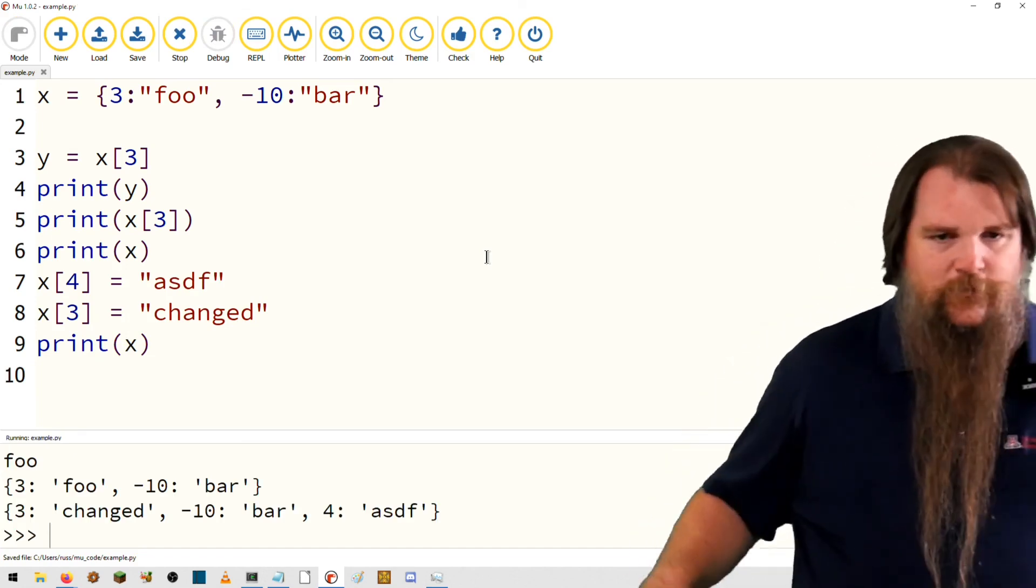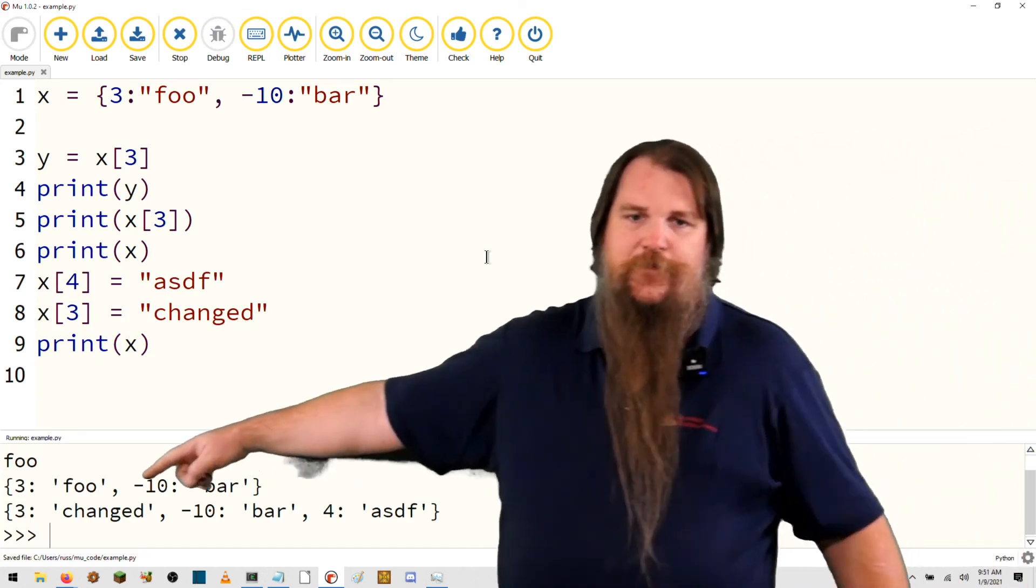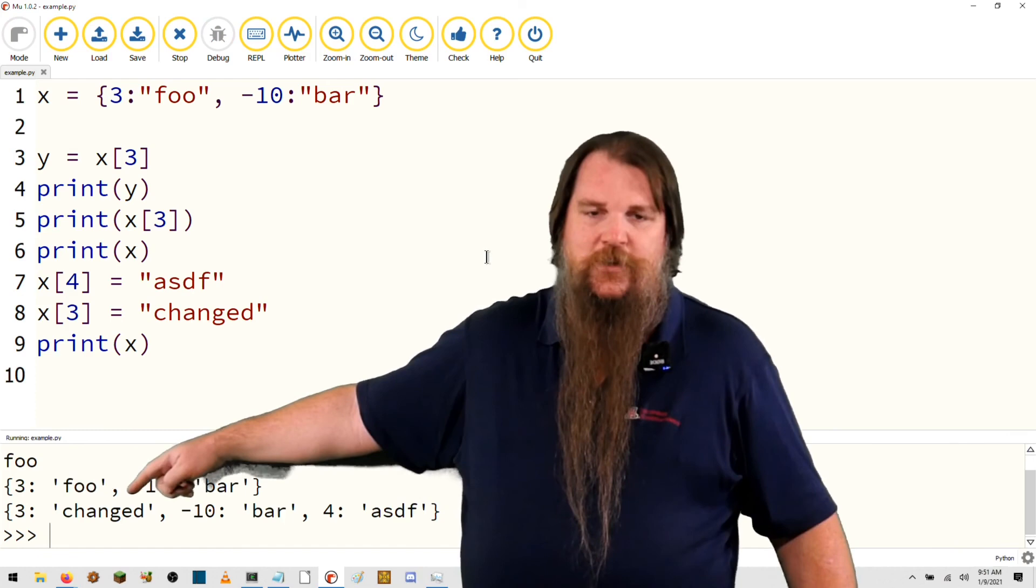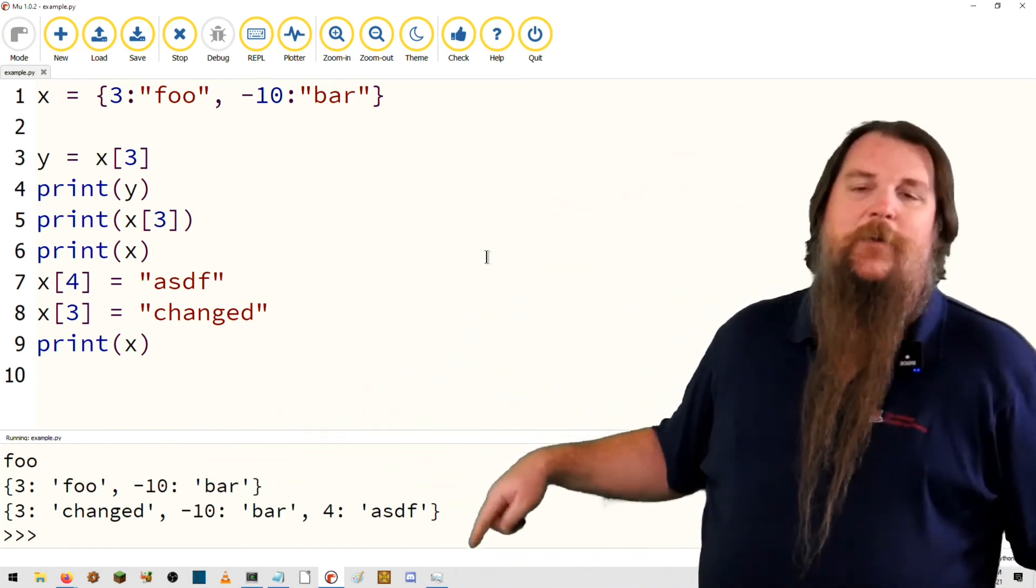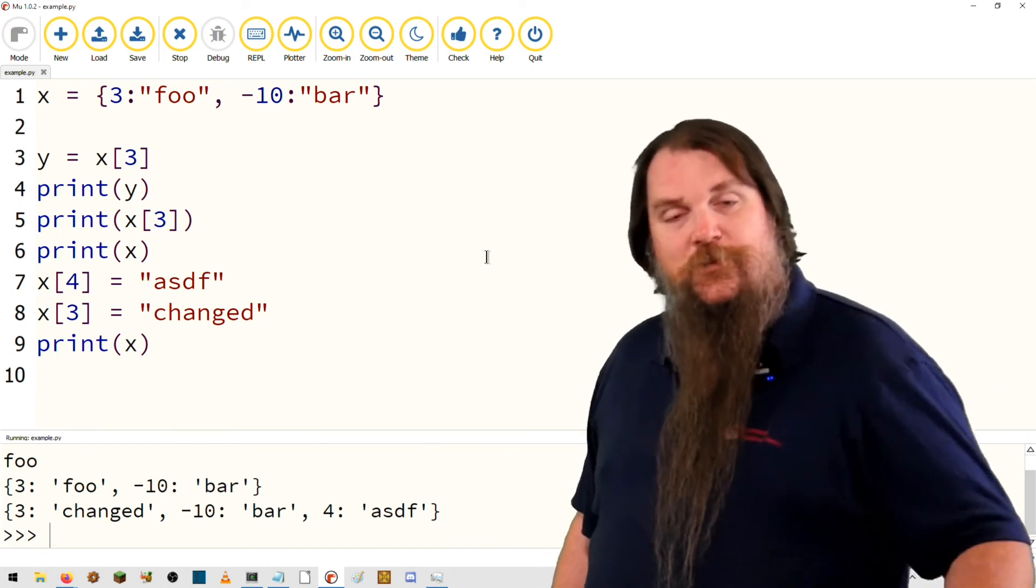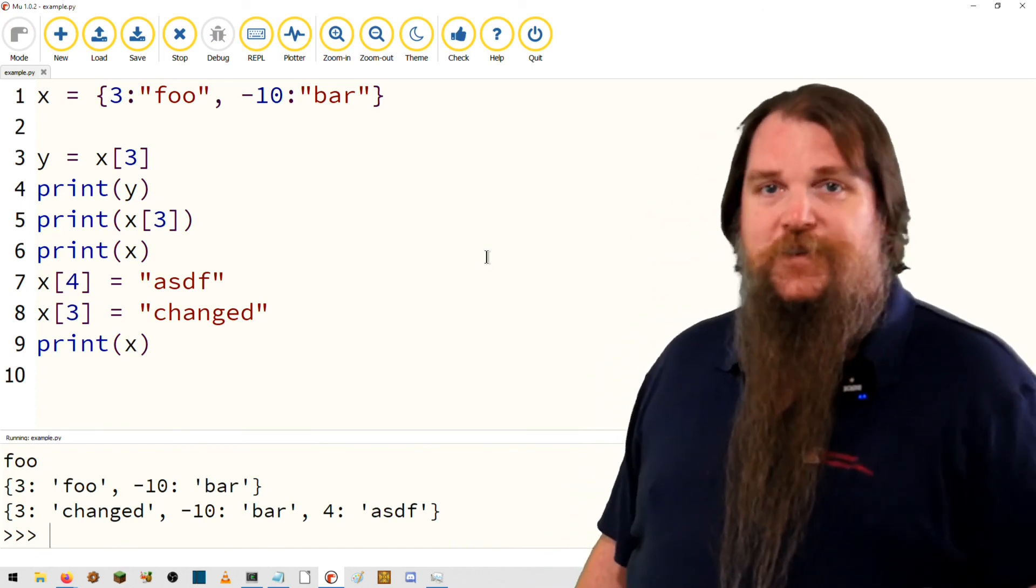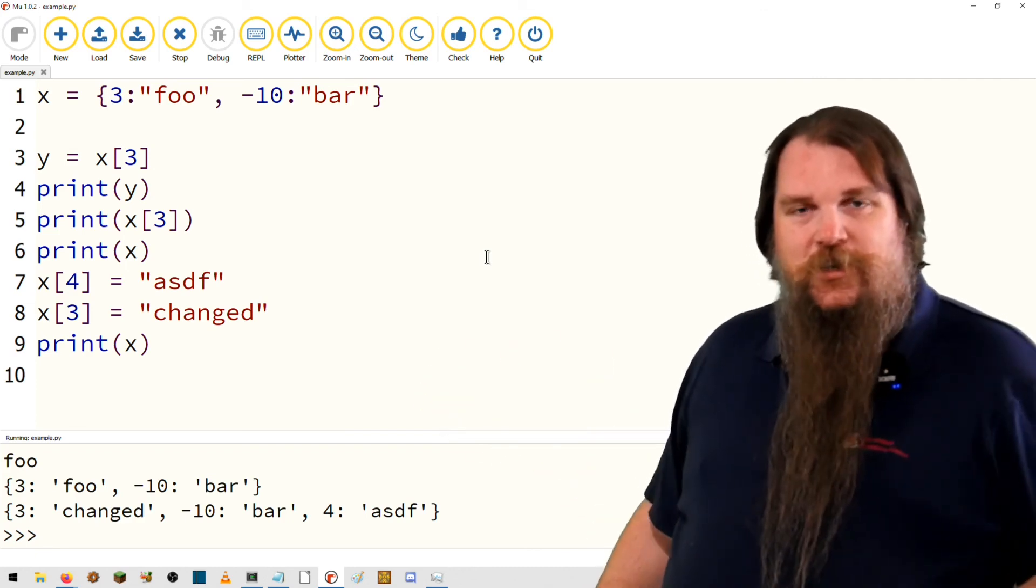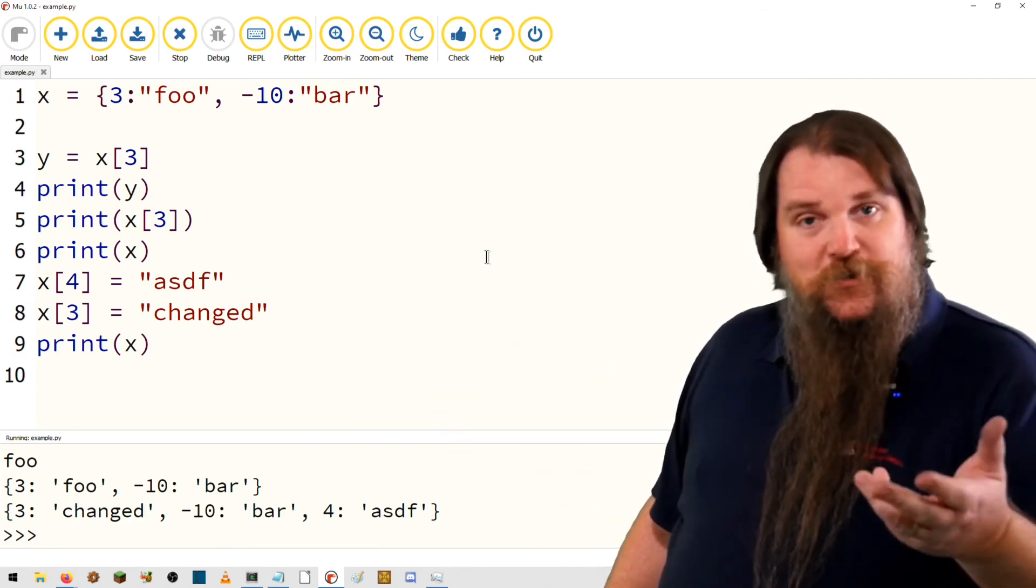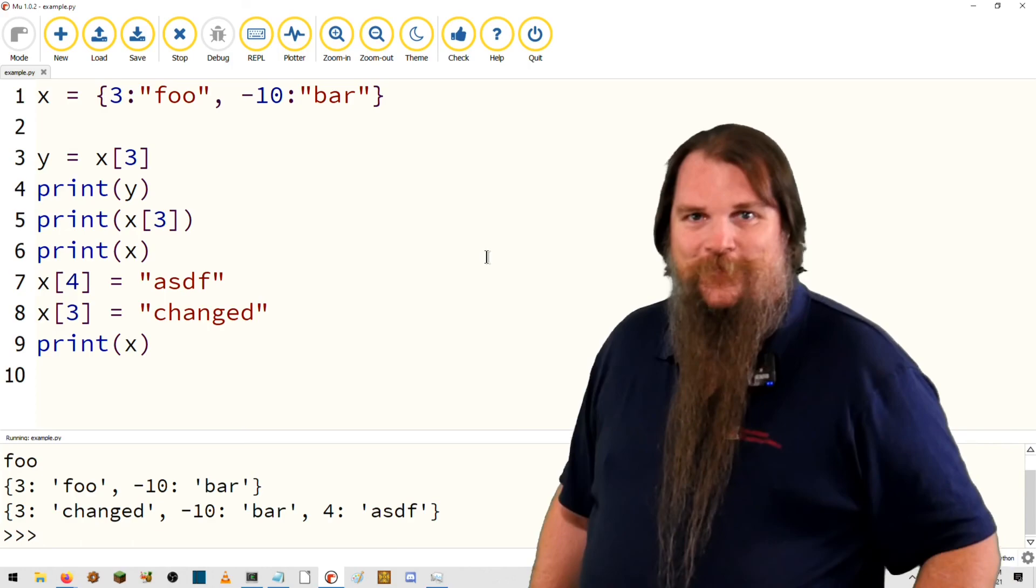When we run it, what we see is that 3 now maps to the string changed, negative 10 still maps to bar, 4 maps to asdf. So we'll show a lot more about what you can do with all of these types in future videos, but this is the basic introduction to the most important types that you'll be using in this class. Bye-bye.